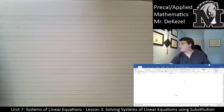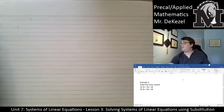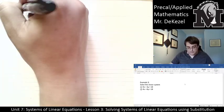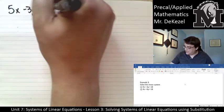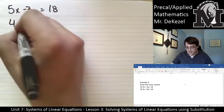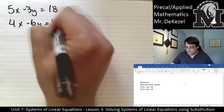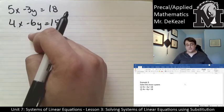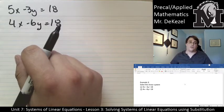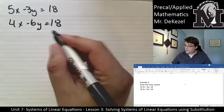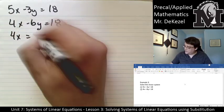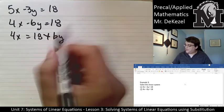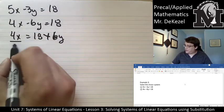We have one more example and then a try it on your own and then that's it for this lesson. So we've got 5x minus 3y equals 18 and I've got 4x minus 6y is equal to 18. I'm going to take this bottom equation and rearrange it to solve for x because none of the options look good. There's no way I'm going to avoid fractions. So I would have 4x equals 18 plus 6y.